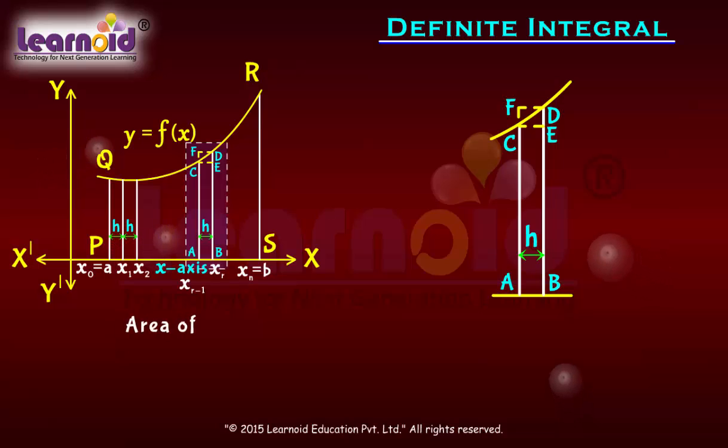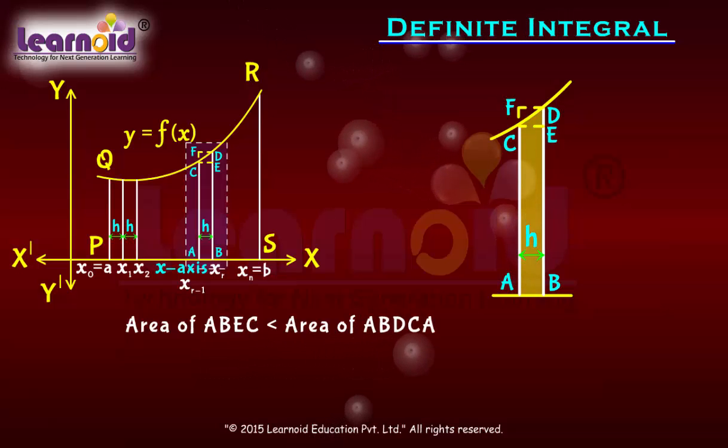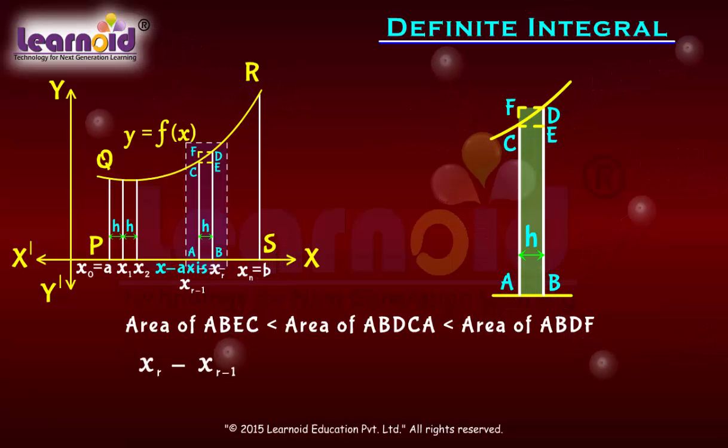Area of region ABEC is less than area of ABDCA which is less than area of ABDF. As points on the x-axis come closer, the difference between two endpoints of any interval tends to become zero. That is, h tends to zero and the areas become nearly equal to each other.